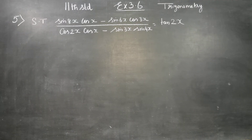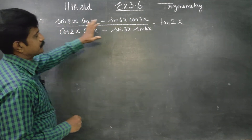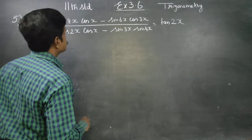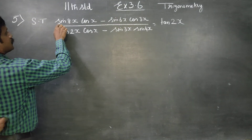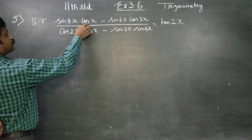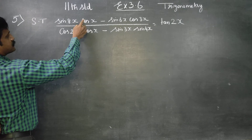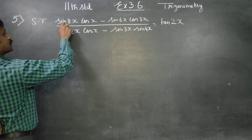Dear 11th standard students, in exercise number 3.6, sum number 5, show that it is equal to tan 2x. First of all, this is a product — I am going to change this into sum or difference.